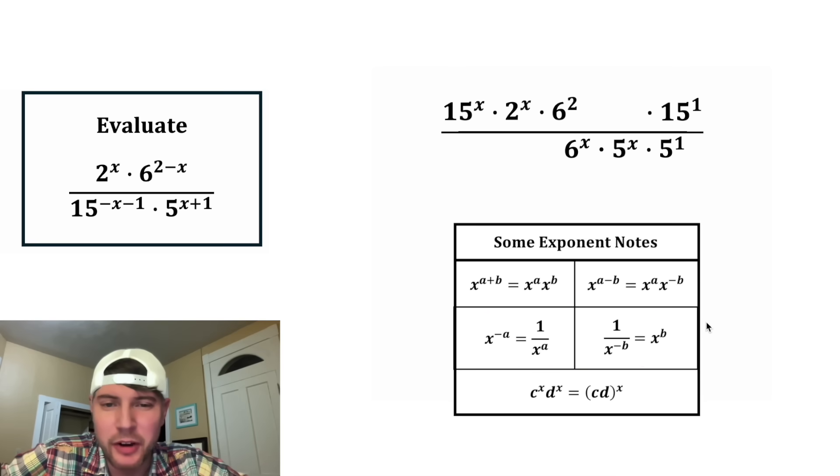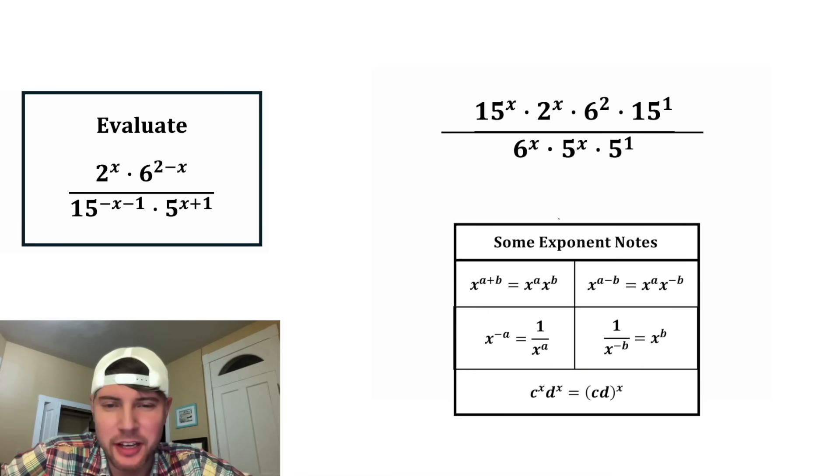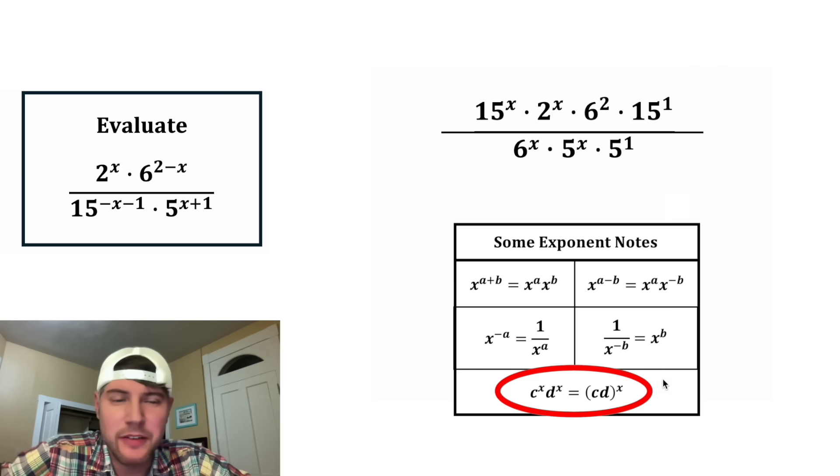And now we've gotten rid of all the negative exponents. Let's smush everything together. Next, I want to combine all of these that have the same exponent. So these are the notes right here. If you have something like c to the x times d to the x, you can rewrite that as cd to the x.